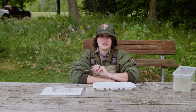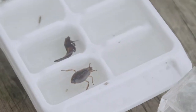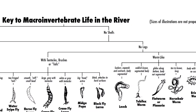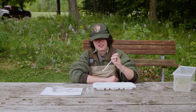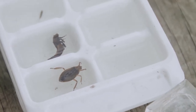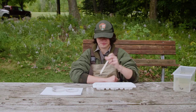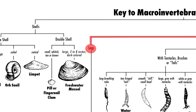The first question is: does our macroinvertebrate have a shell? No, it does not. The next question is: does our macroinvertebrate have legs? Is it worm-like or more insect-like? And yes, it does have legs.